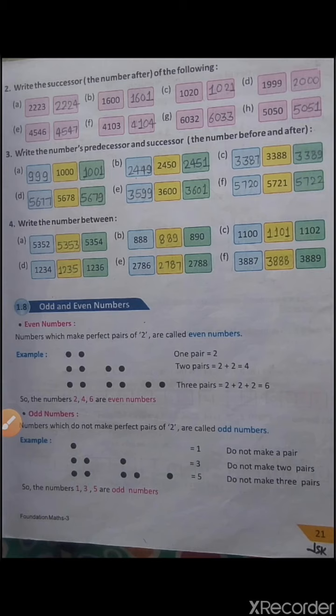The successor of this number is 1102. In D, predecessor is 1234, so the number will be 1235 and the successor is also given: 1236. In E, predecessor of the number is 2786, so the number will be 2787. Successor is already given: 2788. And in F, the predecessor is 3887, so the number will be 3888 and the successor is 3889.